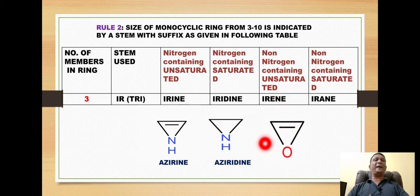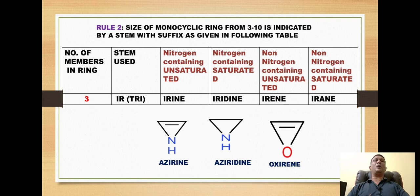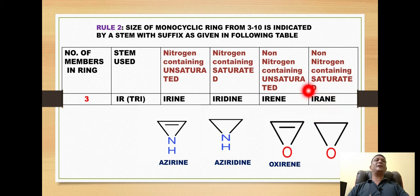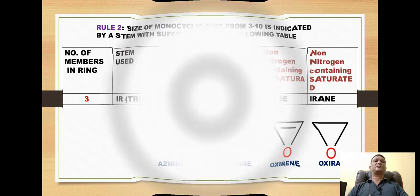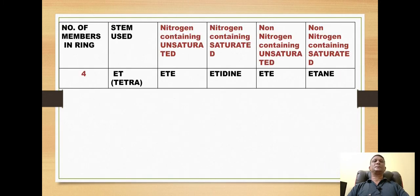For a three-membered ring that does not consist of nitrogen — for example, one containing oxygen — we use the suffix 'irene', giving the name 'oxirene'. If the three-membered non-nitrogen ring is completely saturated, we use the suffix 'irane', giving the name 'oxirane'.